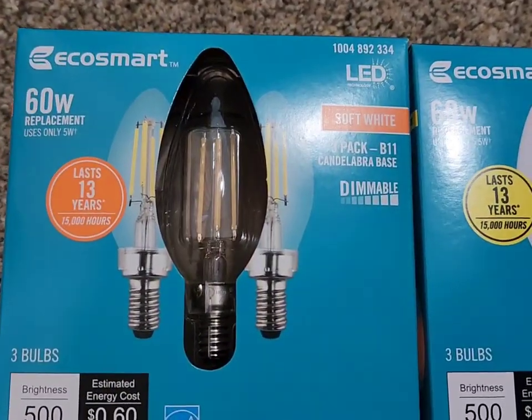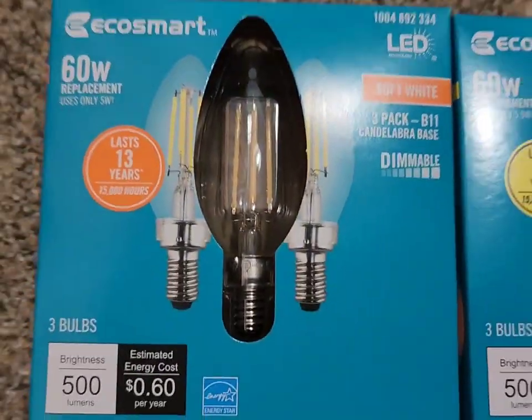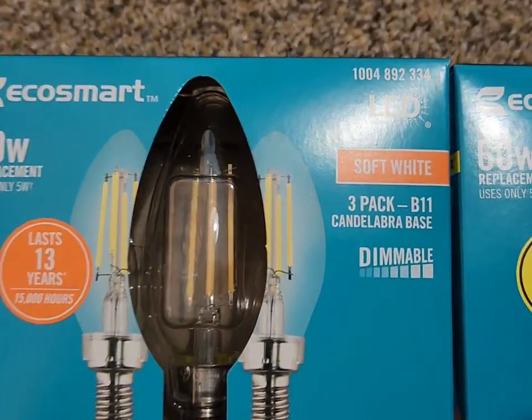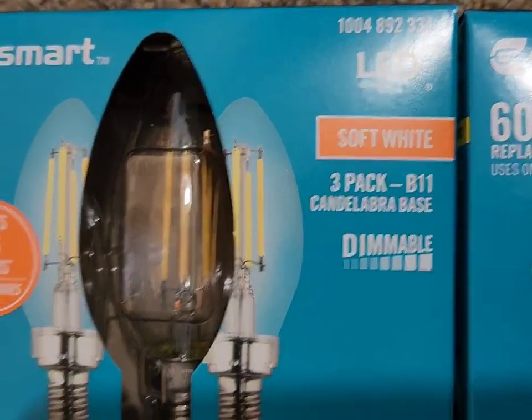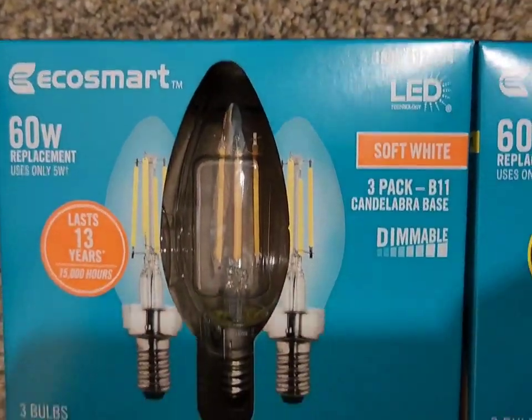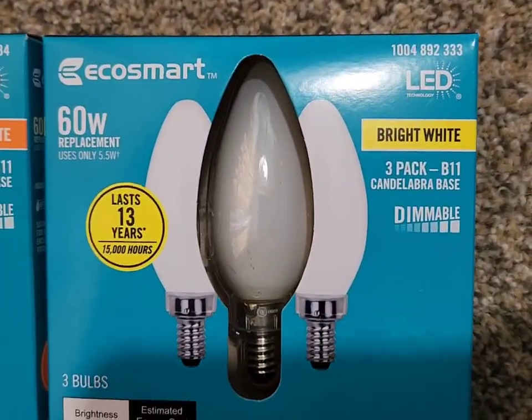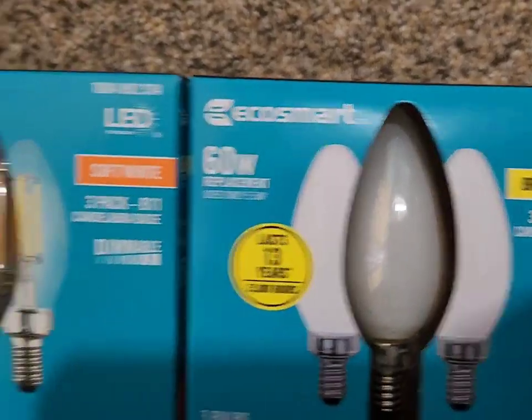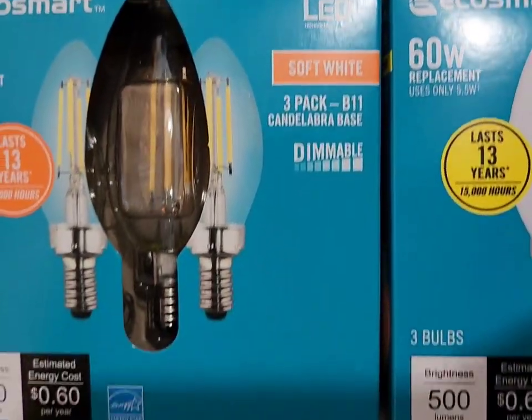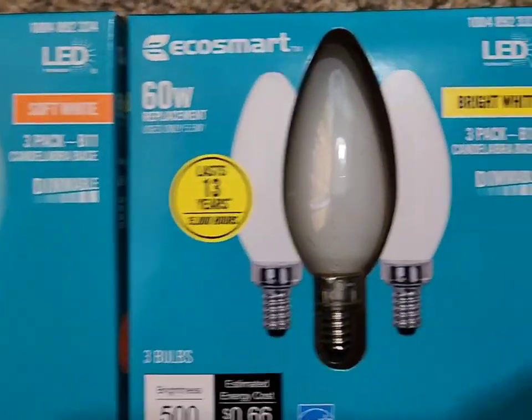These are the two kinds of bulbs that I put in there for testing. One is called the soft white which is like yellowish tinge and the other one is bright white. I got it eco smart, I got it from Home Depot I think or Lowe's, one of the two.